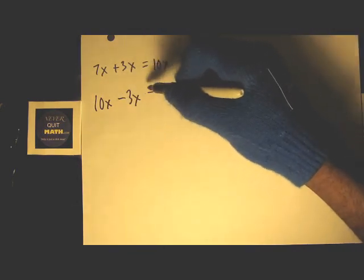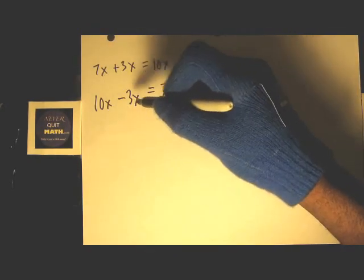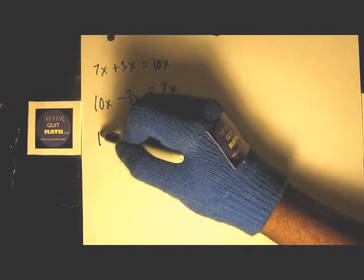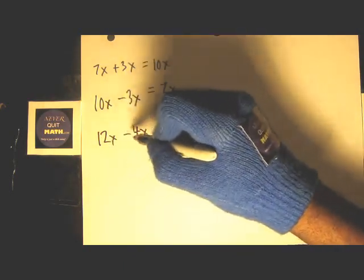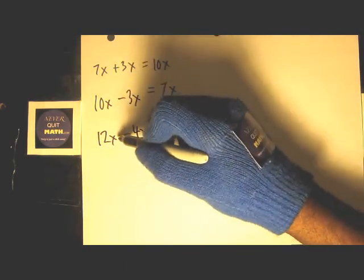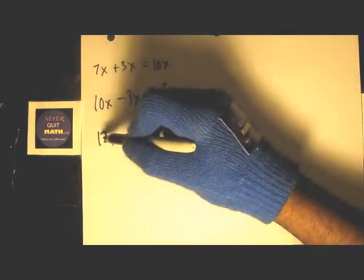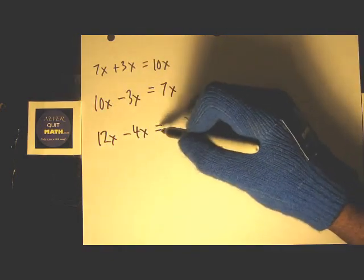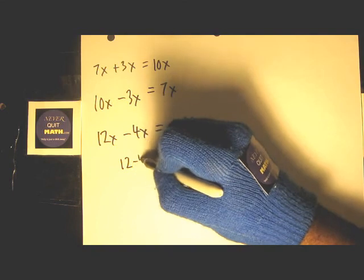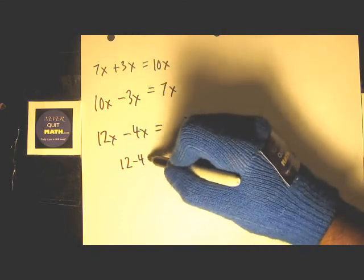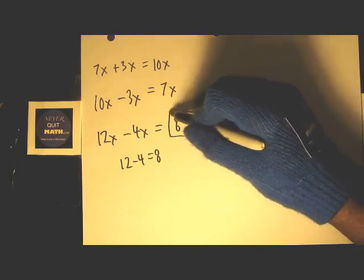Another way you can look at this: if we had 12x minus 4x, always know that we're dealing with apples, so my answer is going to be in apples at the end. Then what's going to happen, I just do 12 minus 4, and 12 minus 4 equals 8, so I know my answer is 8x or eight apples left.